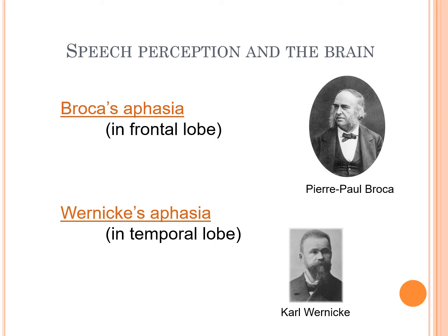Broca's area is right up in the frontal lobe — it's one of the motor areas. This is an issue of getting words out so that we can make a conscious choice about the word we want to say. She has this tip-of-the-tongue effect — she knows what she wants, it's just hard to watch her search for each word.